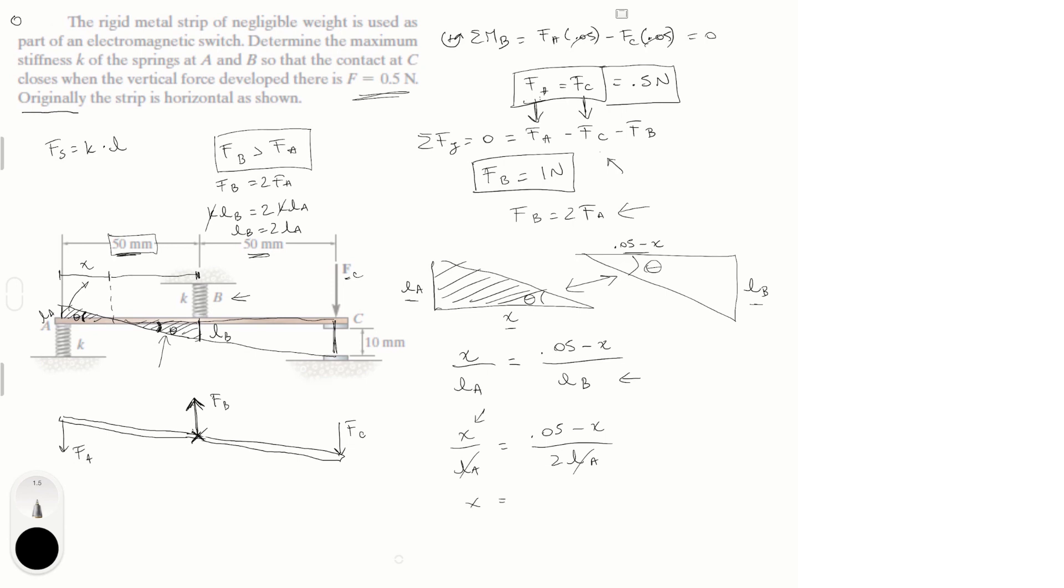So X is equal to 0.025, so it's 0.05 divided by 2, minus 0.5 X. So if you solve for X, you're going to get that this is equal to 0.01667 meters. With this X, you can actually figure it out, the rest of the problem.